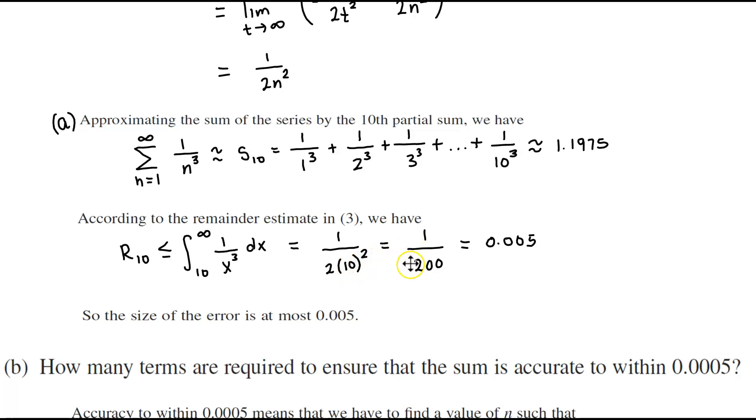which is equal to 1 over 200, which would then equal 0.005. And so therefore the size of the error is at most 0.005.